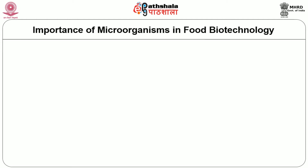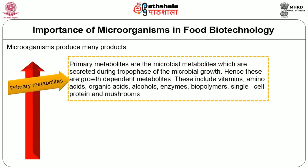We shall discuss how these microorganisms are important in food biotechnology. Microorganisms produce many products. Primary metabolites are the microbial metabolites which are secreted during the trophophase of microbial growth. Hence, these are growth-dependent metabolites. These include vitamins, amino acids, organic acids, alcohols, enzymes, biopolymers, single cell protein and mushrooms.